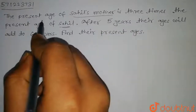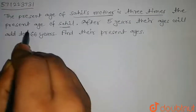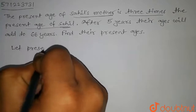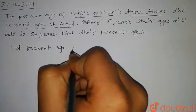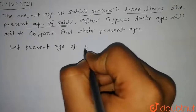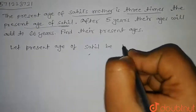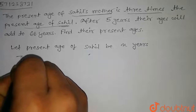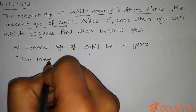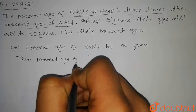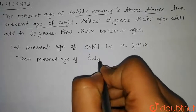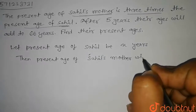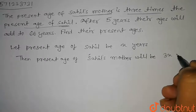It is given that the present age of Sahil's mother is 3 times the present age of Sahil. So if we let the present age of Sahil be x, then the present age of Sahil's mother will be 3x years.